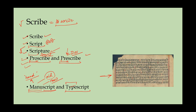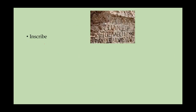This word is still in use today — somebody can ask you to write your work either as a manuscript or as a typescript. If they ask for a manuscript, you write with pen and hand; if typescript, you type it on your computer. Both manuscript and typescript contain the root 'scribe' meaning to write — one with the help of your hand and the other with the help of a typing machine.